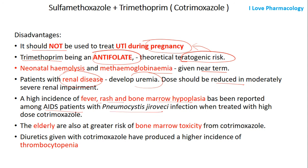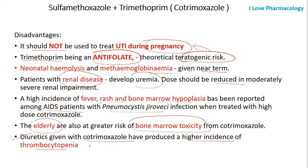In elderly individuals, cotrimoxazole can greatly increase the risk of bone marrow toxicity. Also, when diuretics are used along with cotrimoxazole, there is a higher incidence of thrombocytopenia. Patients with renal disease may develop uremia, and in such cases, the dose has to be reduced.